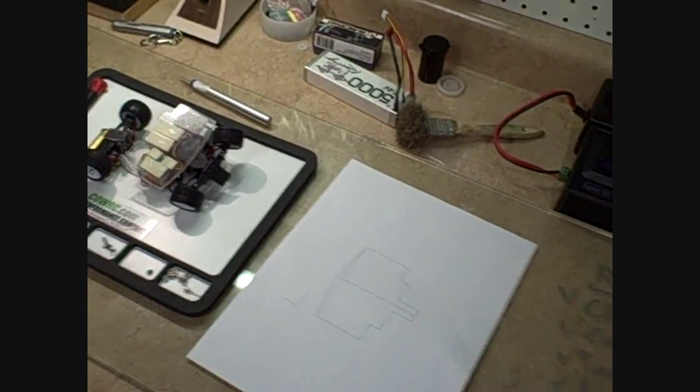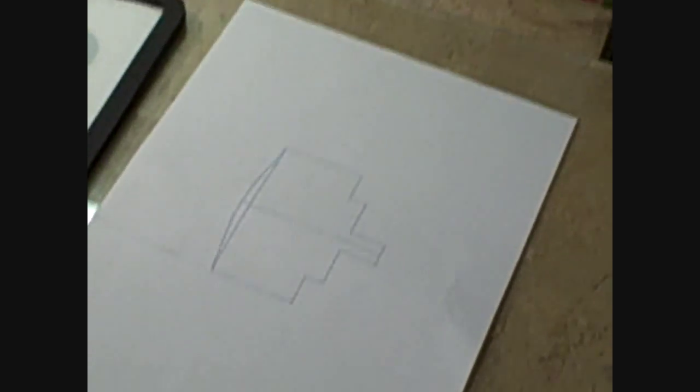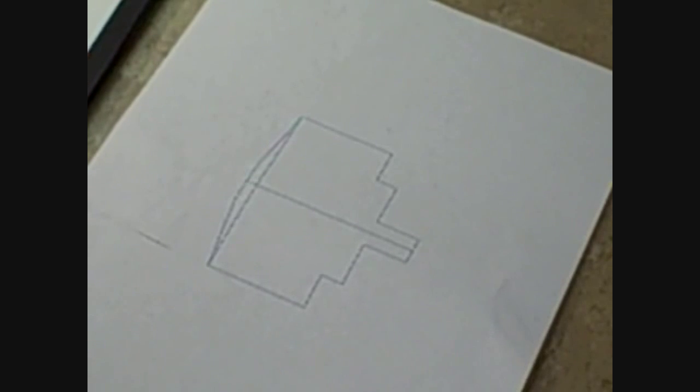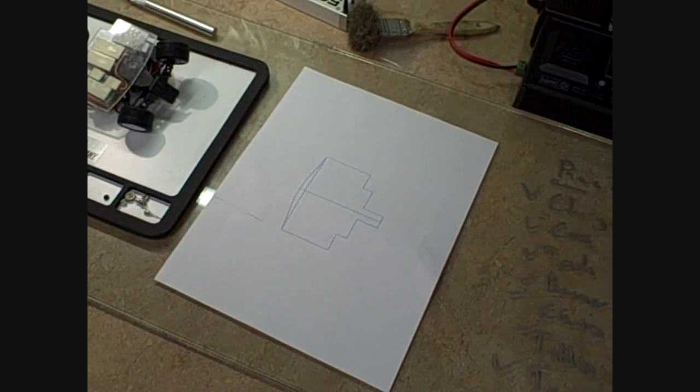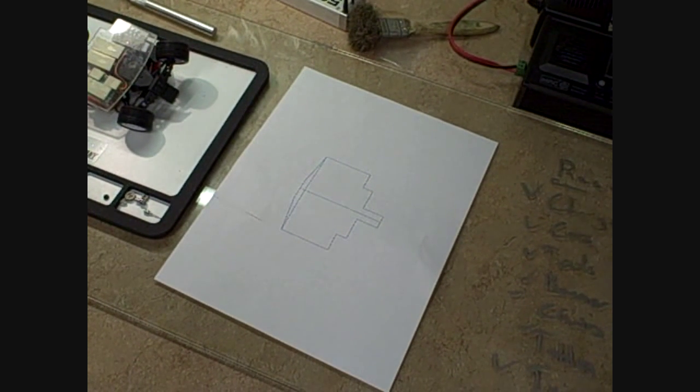Basically what you're going to start out with is you're going to make a template. I used E-Machine Shop, it's a program that you can download online for free to design mine. It's basically like an AutoCAD clone, makes it really easy. So what you're going to do then is you're going to take it and you're going to cut it out.